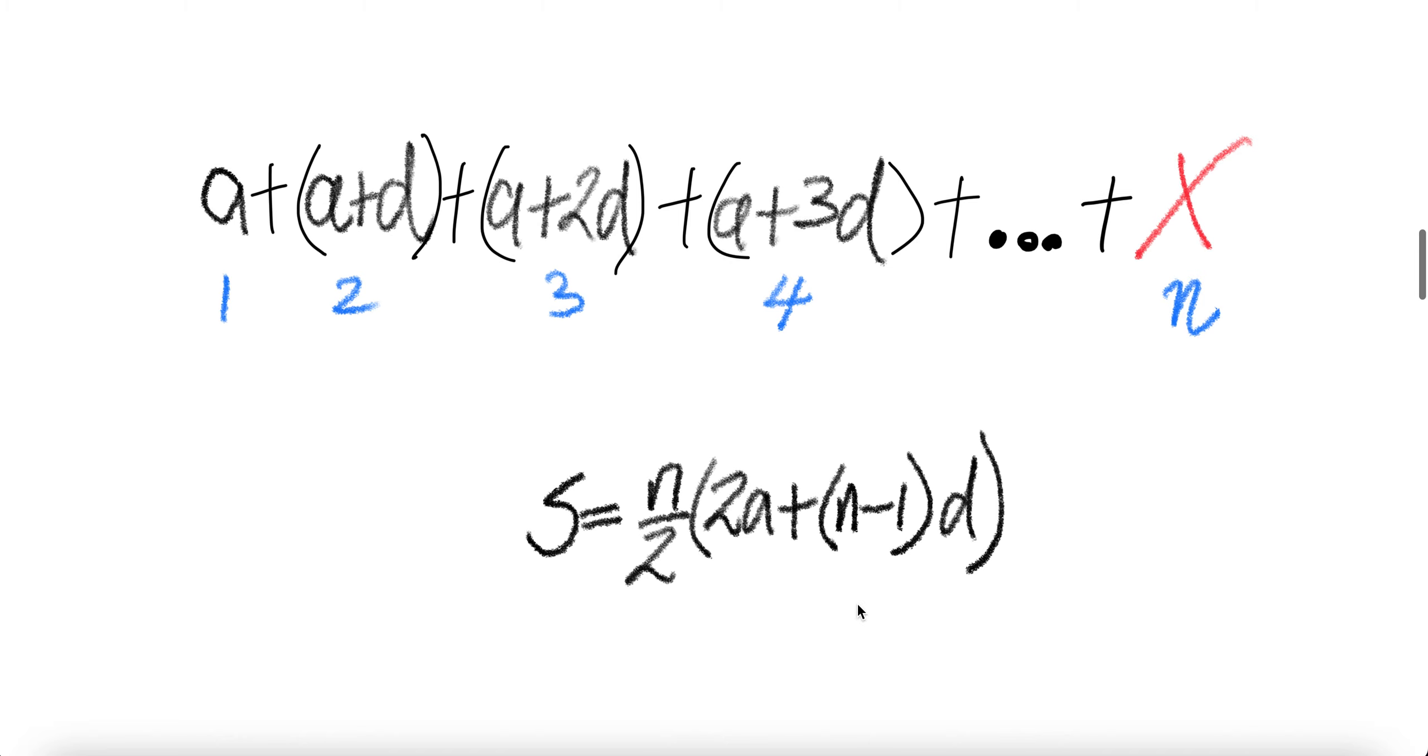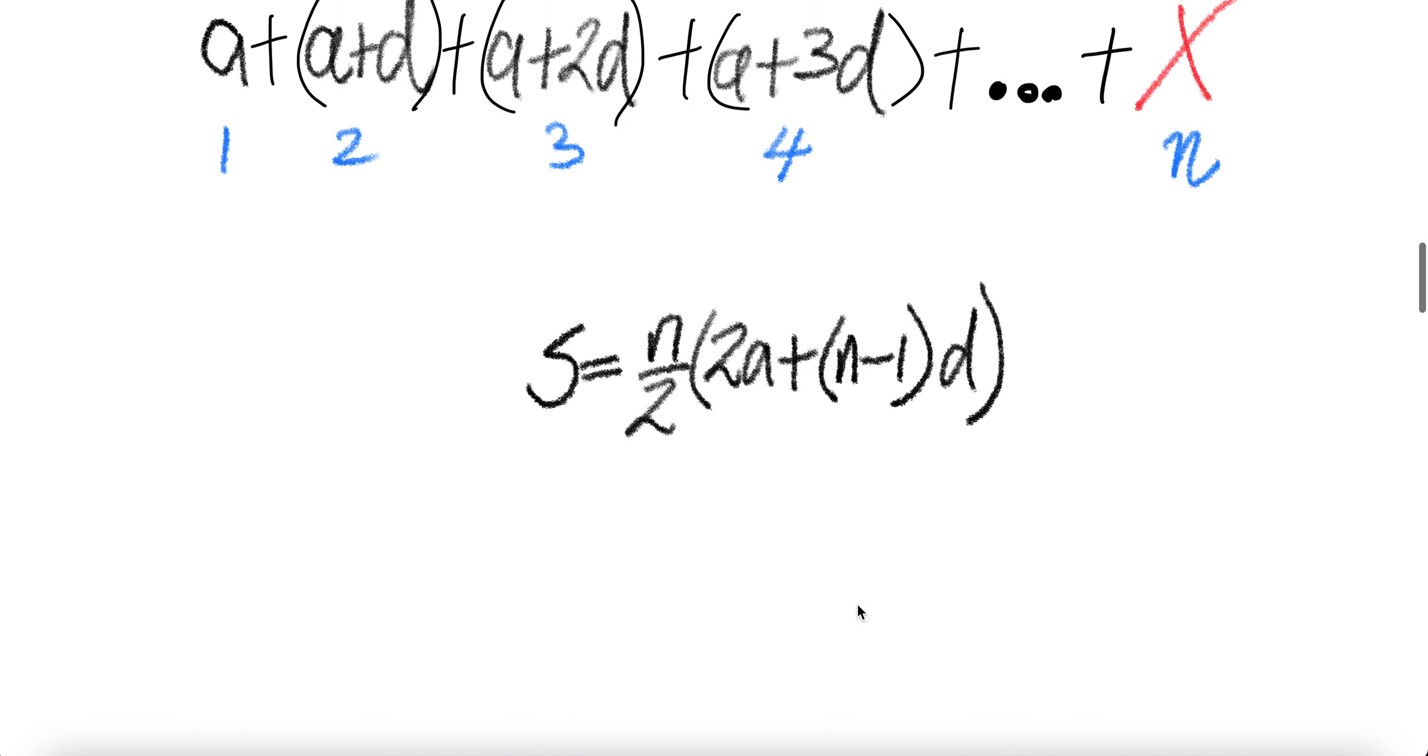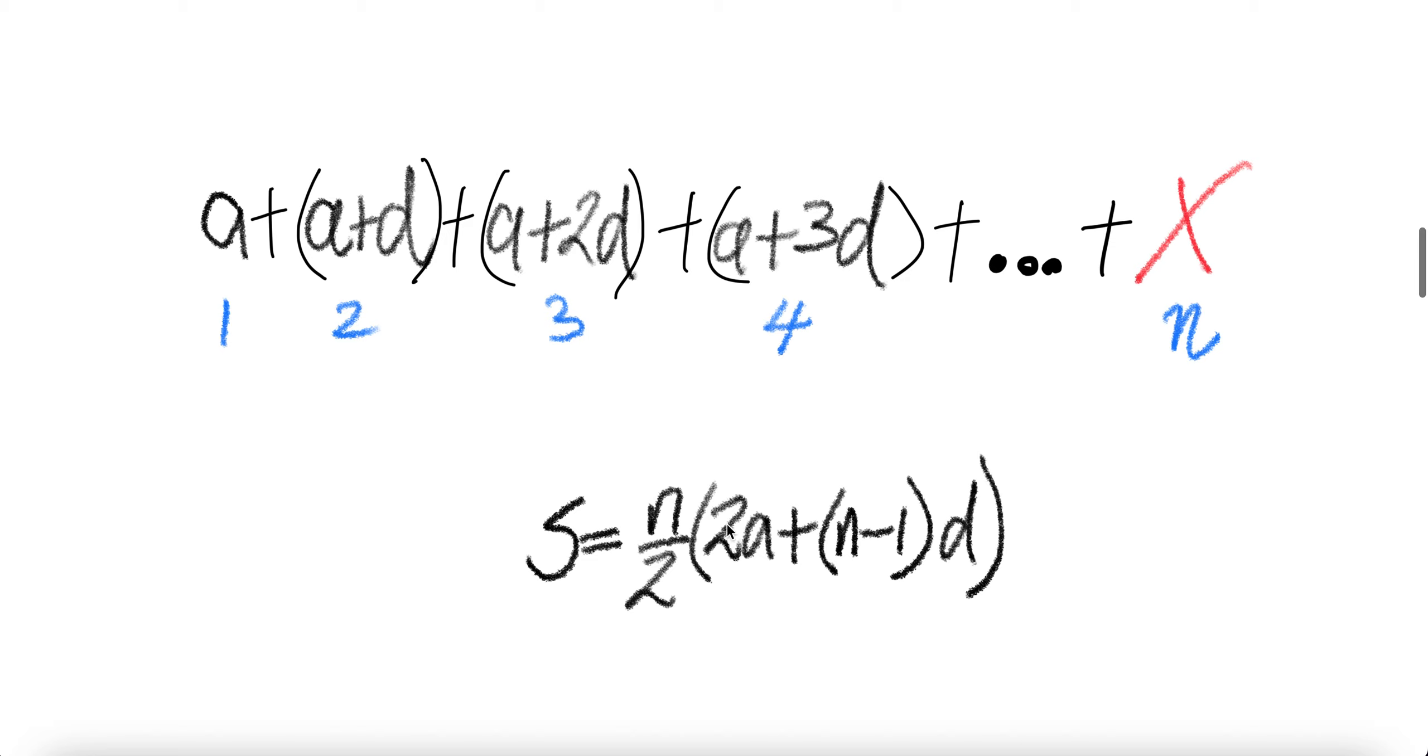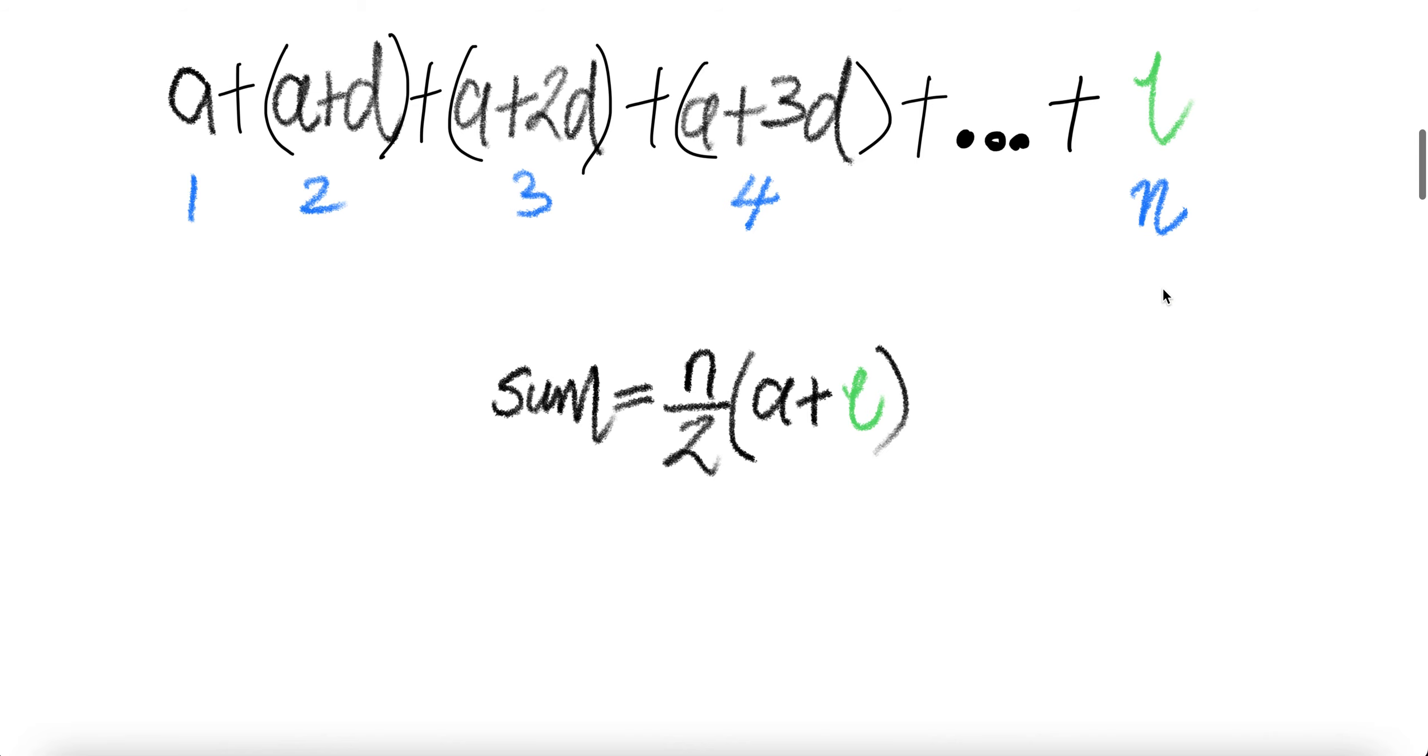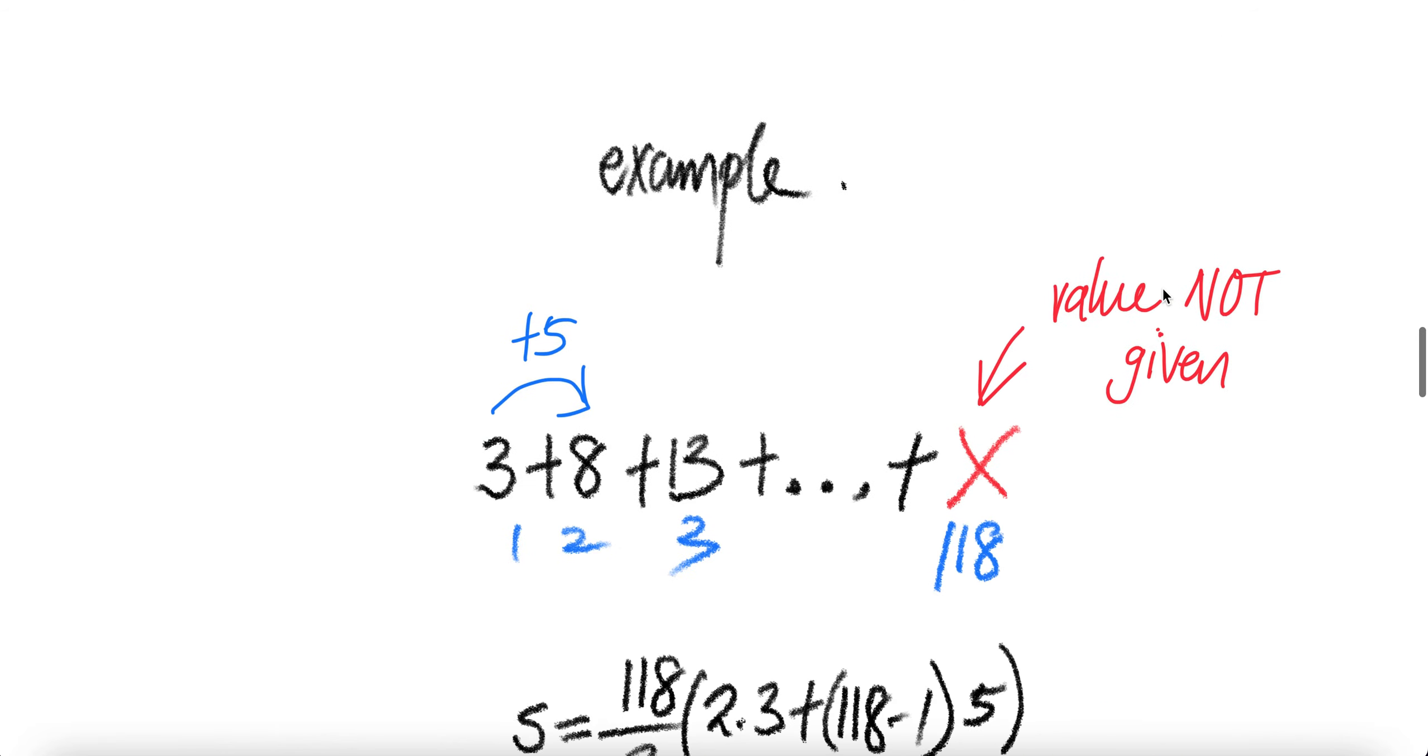And you can easily see why that's true. We can break this two A into A plus another A plus N minus one D. A plus N minus one D will be the value of the nth term, which is this one where we call it L. So there's the reason.